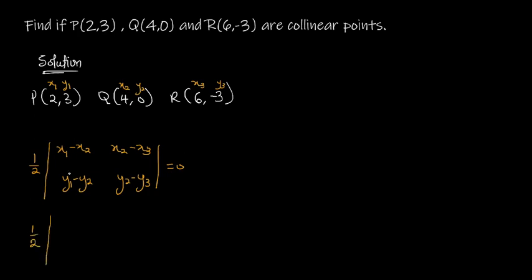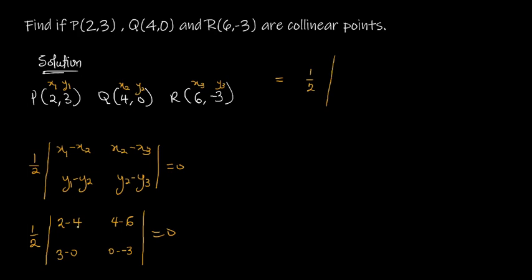So we do our substitution: one-half multiplied by the matrix where x1 is 2 minus x2 which is 4, then x2 is 4 minus x3 which is 6; y1 is 3 minus y2 which is 0, and y2 is 0 minus y3 which is -3. Simplifying: 2 minus 4 gives -2, 4 minus 6 gives -2, 3 minus 0 gives 3, and 0 minus (-3) gives +3.